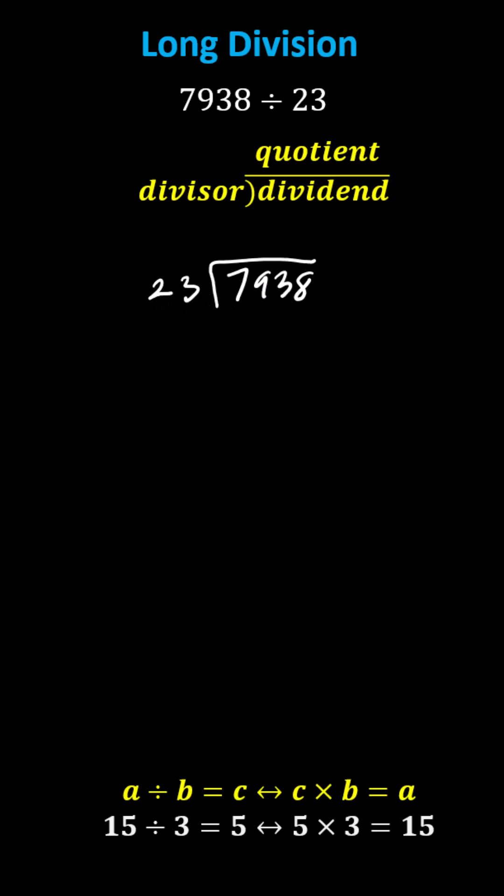Because we have a two-digit divisor, to begin, we only focus on the left two most digits of the dividend, which is the 79.